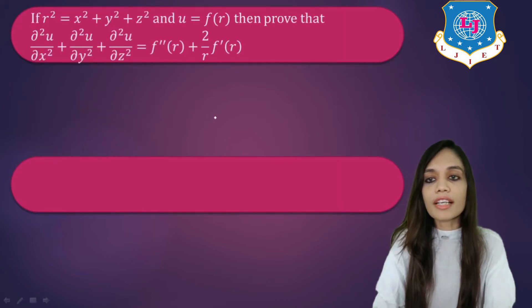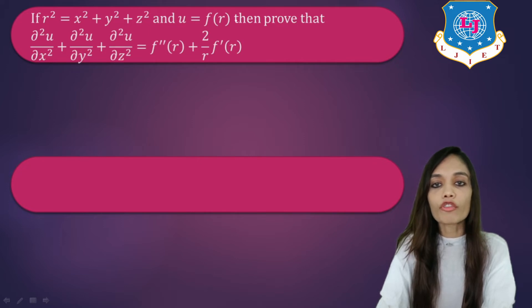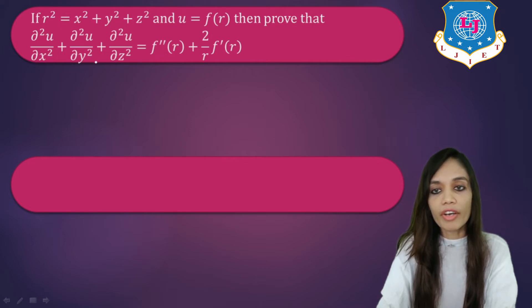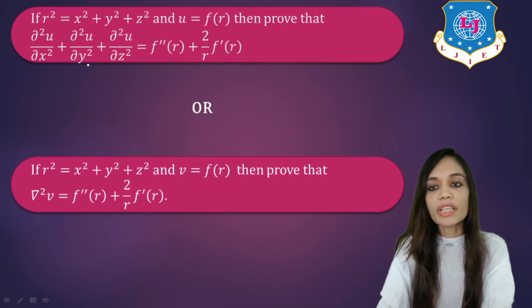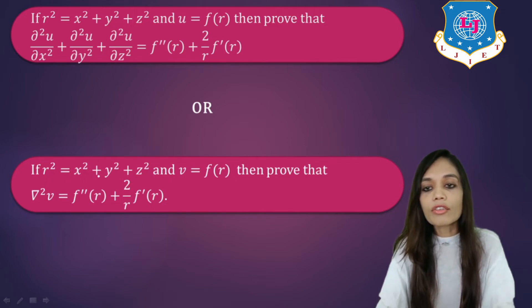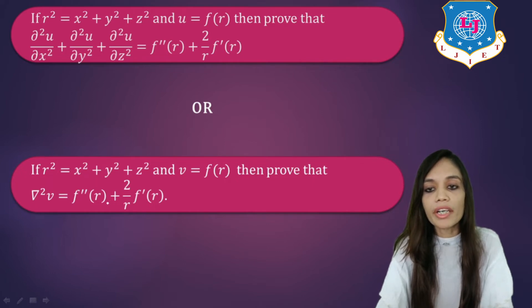Now let us go to our next example. If r square is equal to x square plus y square plus z square and u is equal to f of r, then we have to prove that del square u upon del x square plus del square u upon del y square plus del square u upon del z square is equal to f double dash of r plus 2 by r into f dash of r. Equivalently, del square u equals f double dash of r plus 2 by r f dash of r.